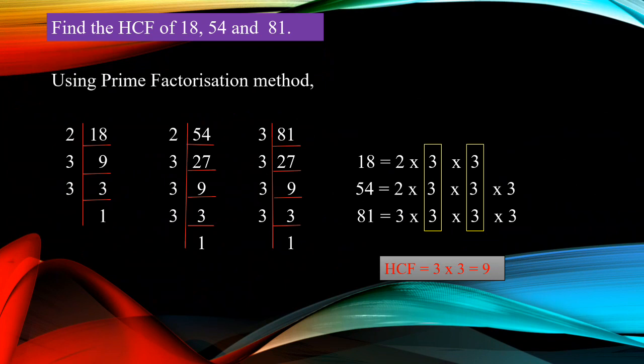Next, 81. 81 is an odd number, so we can use 3 — 27 threes are 81. 27 is a multiple of 3, so divide by 3 — 9 threes are 27. 9 is also a multiple of 3, so again divide by 3 — 3 threes are 9. At last, 3 is a prime number, take 3 again — 1 three is 3. So factors of 81: 3 × 3 × 3 × 3.